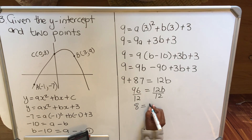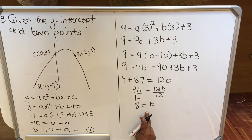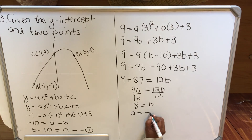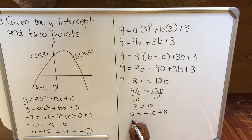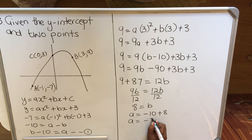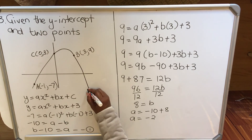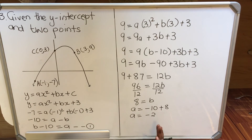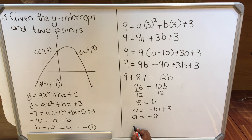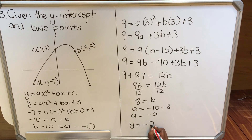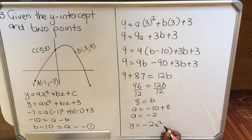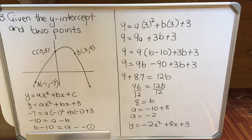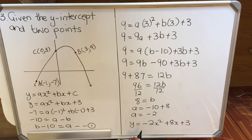So b = 8. Then a = b - 10 = 8 - 10 = -2. The parabola faces down since a is negative, which confirms the shape is correct. Writing in standard form: y = -2x² + 8x + 3.